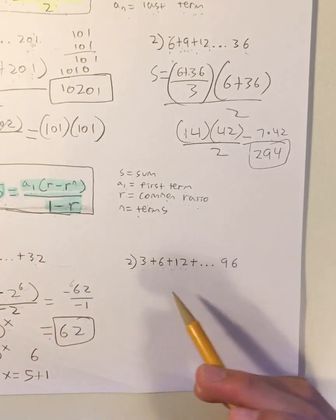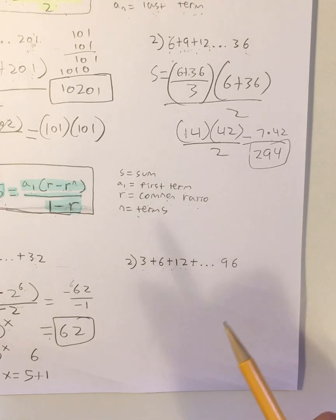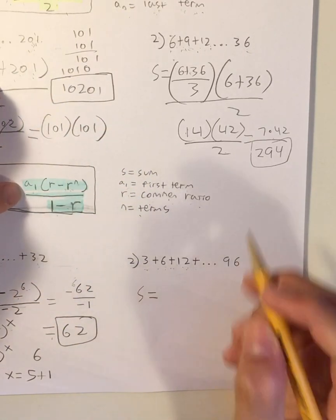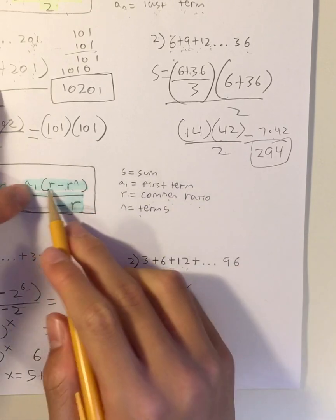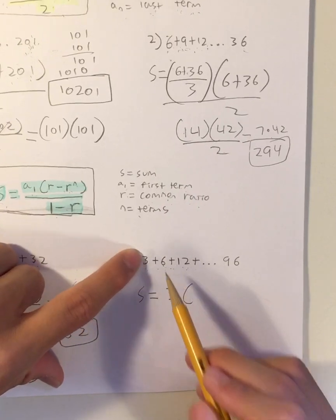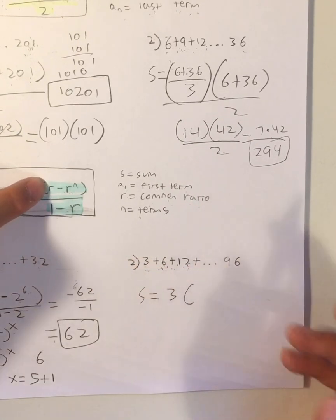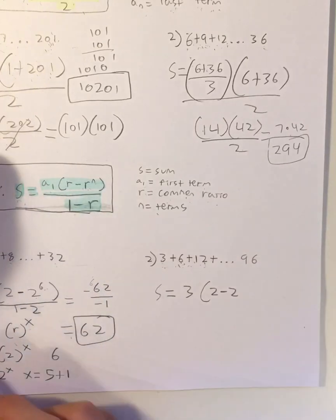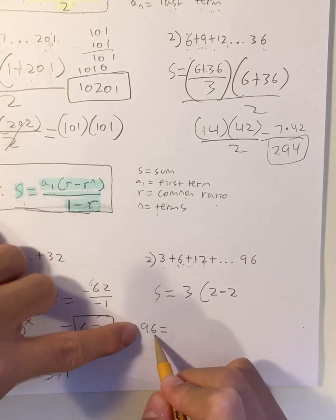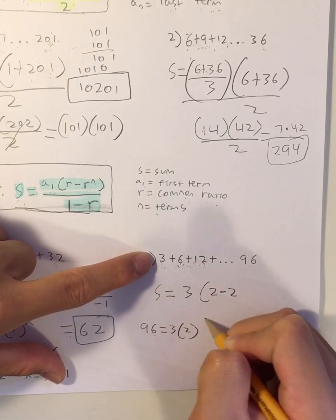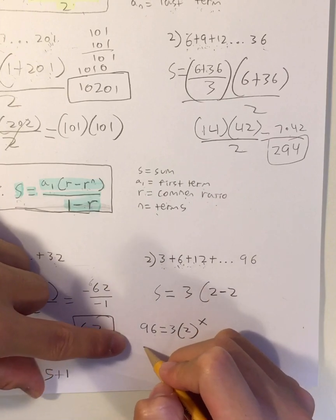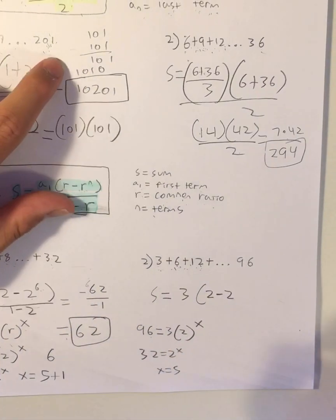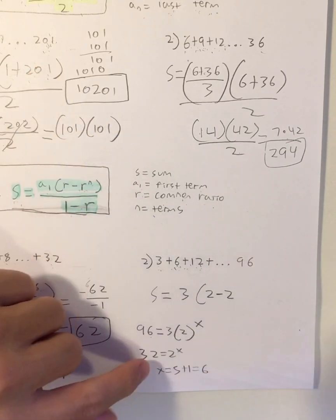So let's move on to the next question with a different sequence but applying the same formula: 3 plus 6 plus 12 all the way up to 96. The sum is equal to A1, which is 3, times R. How do we get R? 3 times 2 is 6, 6 times 2 is 12, so R equals 2. To find N: the last term 96 equals the first term 3 times 2 to the X. Dividing both sides by 3 gives 32 equals 2 to the X, so X equals 5. Adding 1 gives us N equals 6 terms.